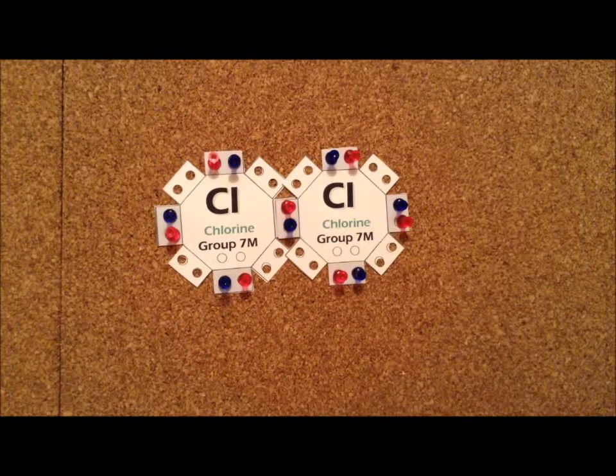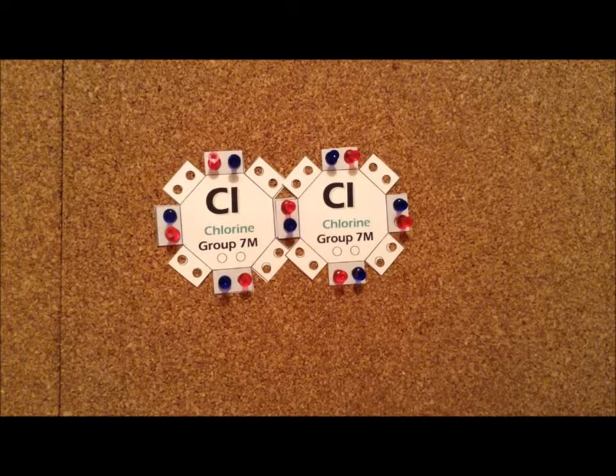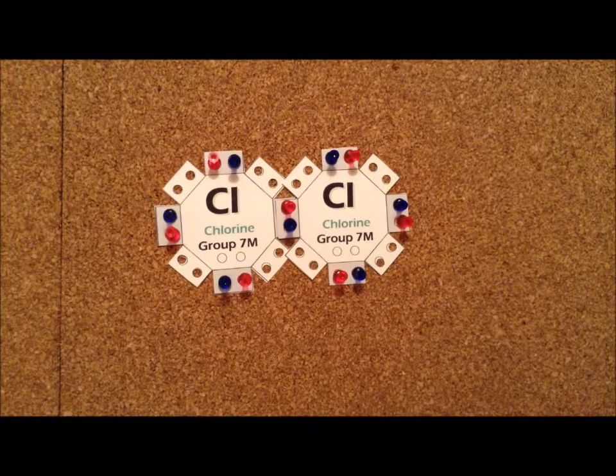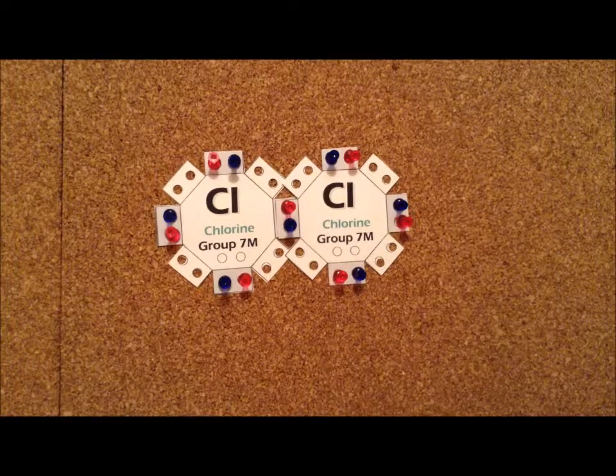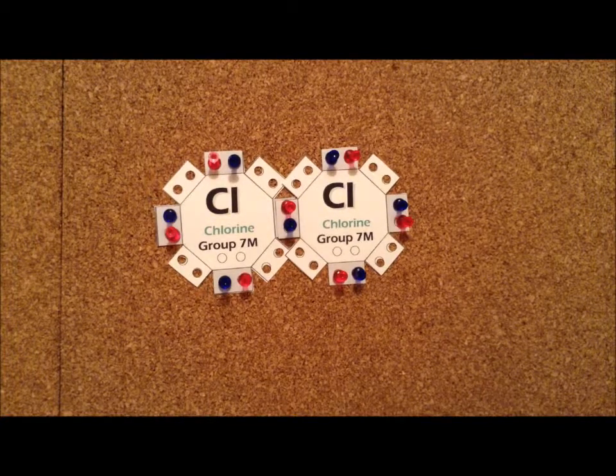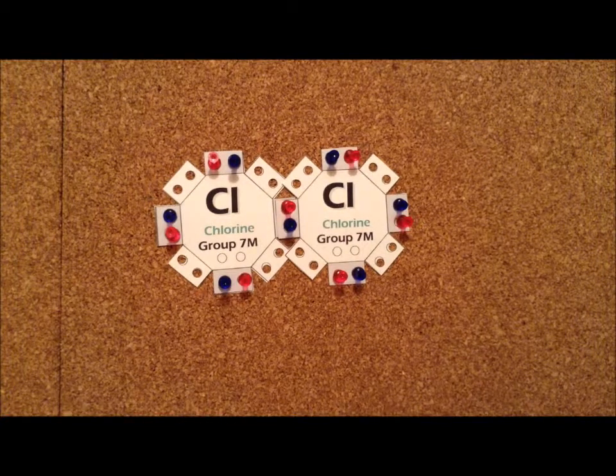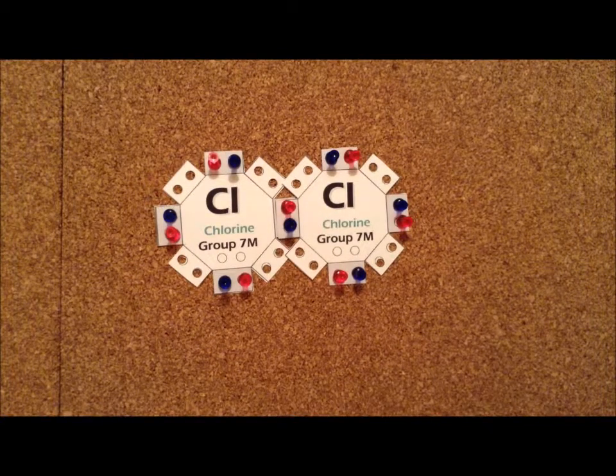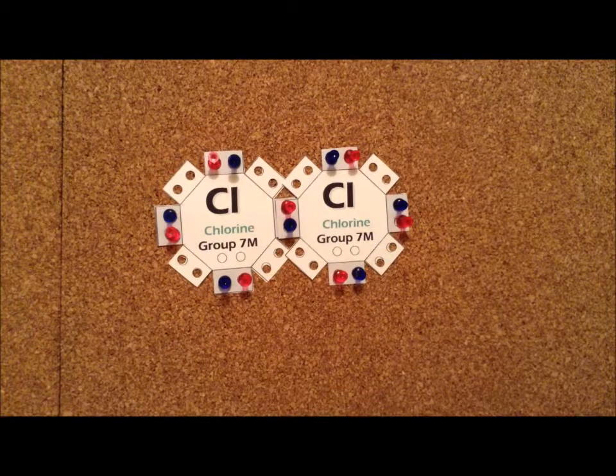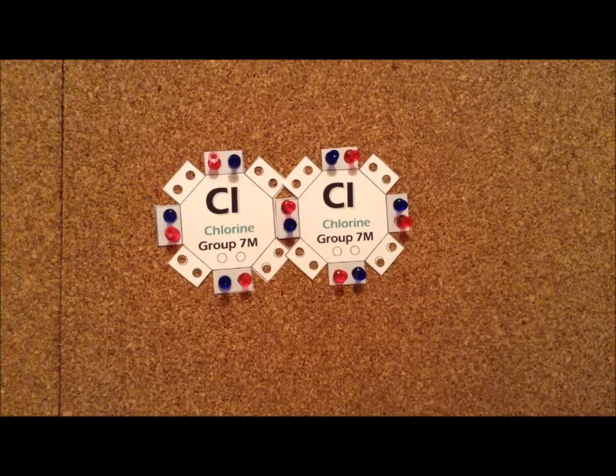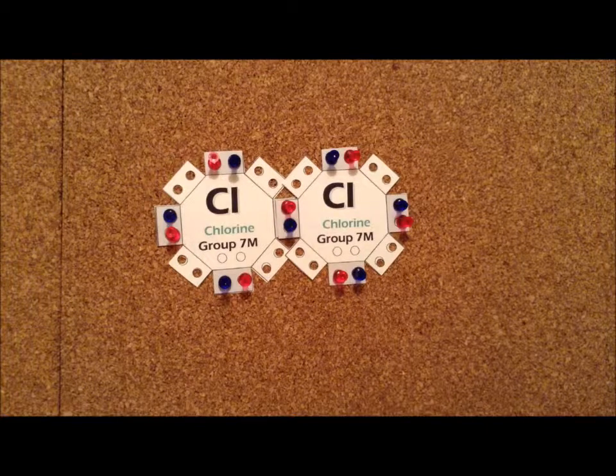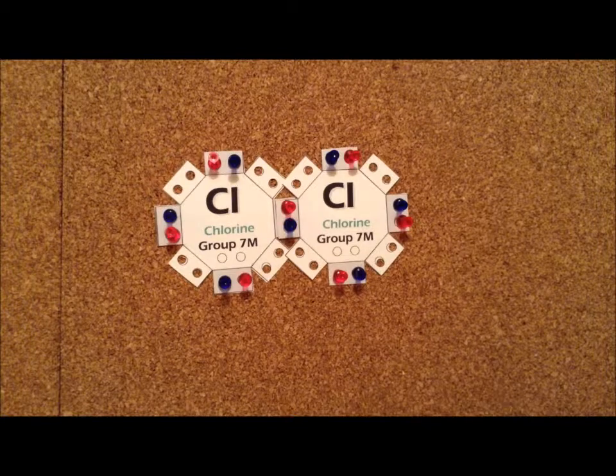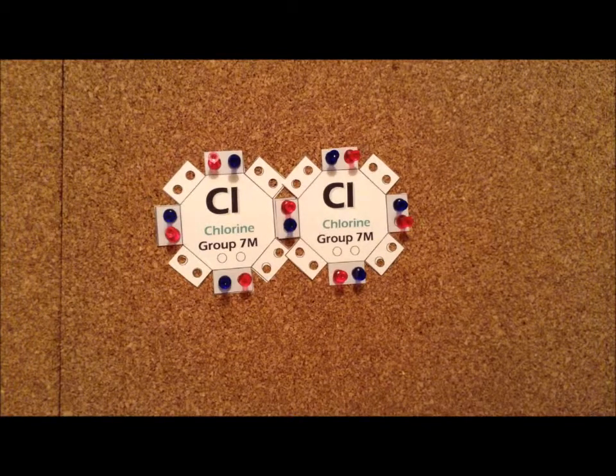We have already developed a Lewis dot structure for difluorine F2. Chlorine is the next element in the same column of the periodic table, column 7, which we call the halogens. Halogen comes from the Greek words for salt former. So fluorine, chlorine, bromine, and iodine are all in the same family and they have many of the same chemical properties.